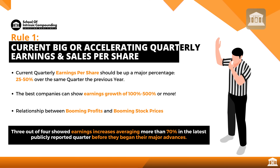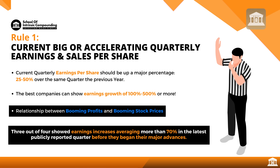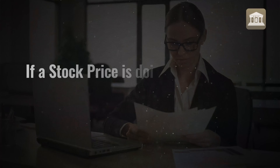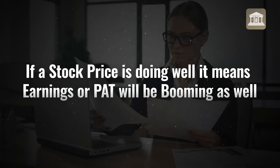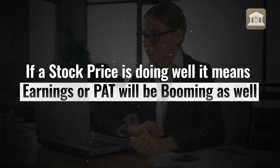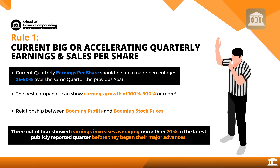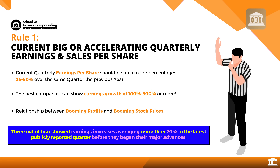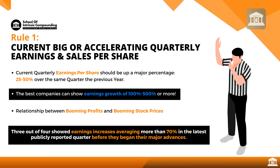Let's apply CanSlim in the Indian context, starting with C — current quarterly growth. A famous quote from the book is that there is a relationship between booming profits and booming stock prices. He talks about companies needing a minimum 25 to 50% current quarterly growth rate. Studies show that three out of four businesses that did really well since the 1880s had more than 70% advance in their earnings growth in the recent quarter, and the best companies can show earnings growth of literally 100 to 500%.